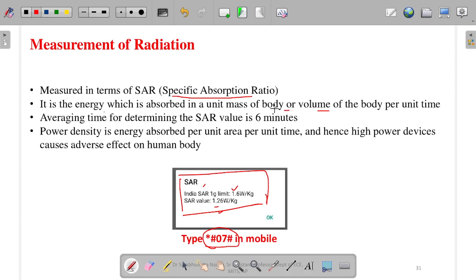If exposed for 1 minute, how much energy is absorbed by the human body. It is 1.6 watt per kg - that means for 1 kg of human body, 1.6 watt of power is absorbed. It is measured for 6 minutes. This is a standard, considering that people use mobile for talking over 5 to 6 minutes.